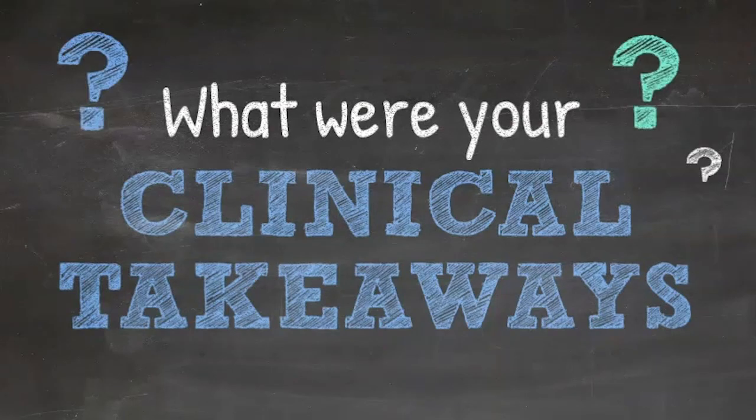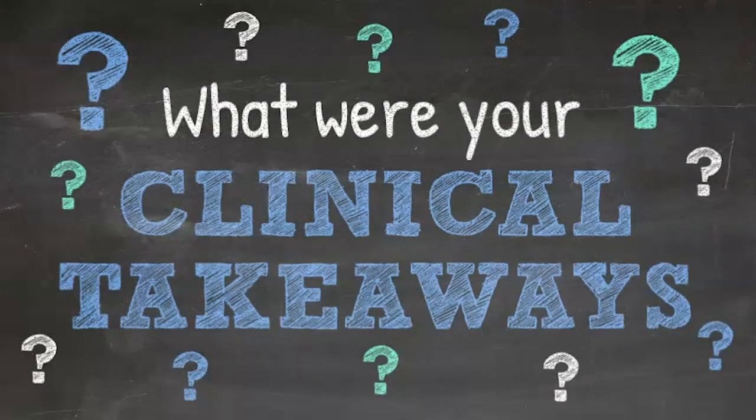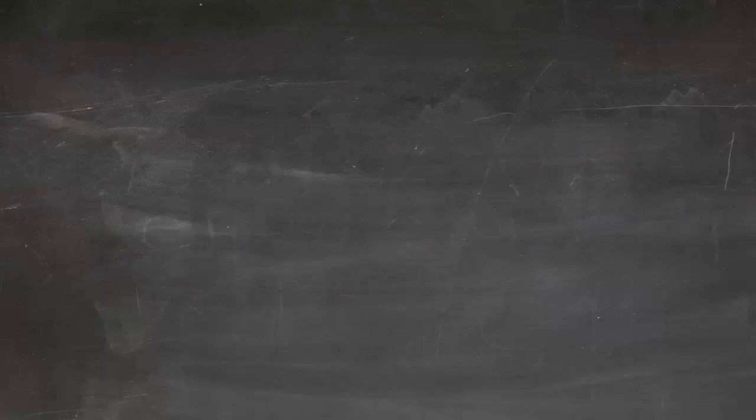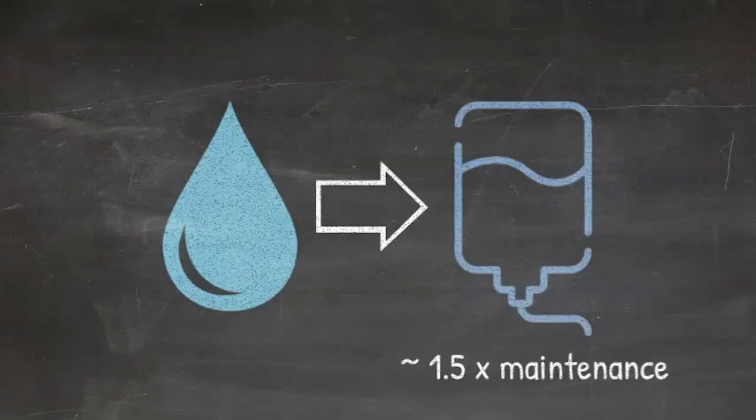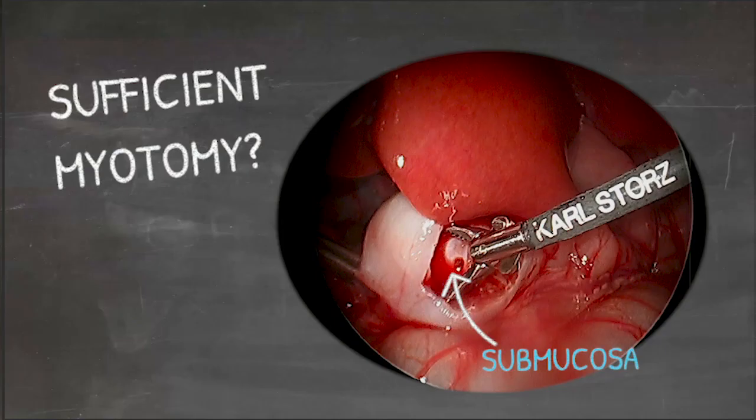Now that you've worked through pyloric stenosis, what would you say are your key takeaways from today? Be sure to understand the typical presentation of these patients with progressively worsening non-bilious emesis, persistent hunger, and increasing dehydration. Know their typical physiologic derangement of hypochloremic, hypokalemic, metabolic alkalosis. And finally, understand the mainstay of treatment. First, with appropriate resuscitation. And second, a pyloromyotomy along the length of the hypertrophied pylorus.